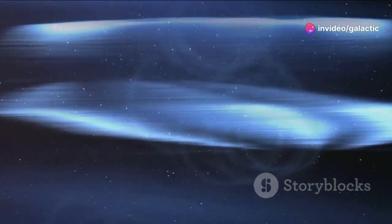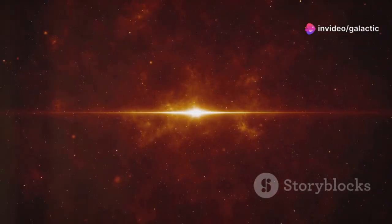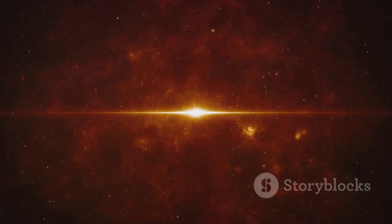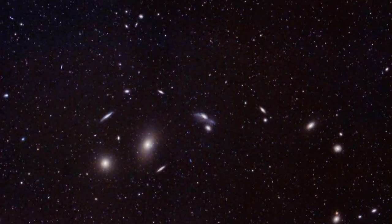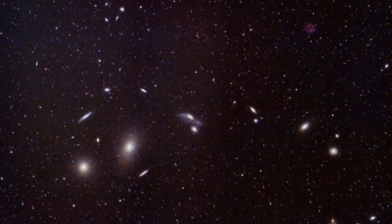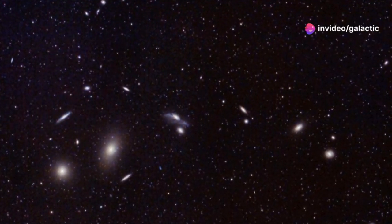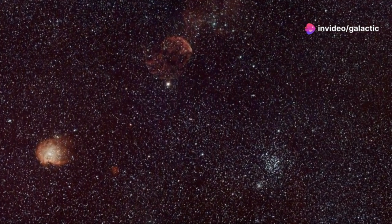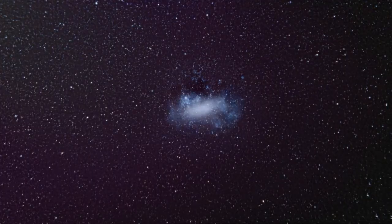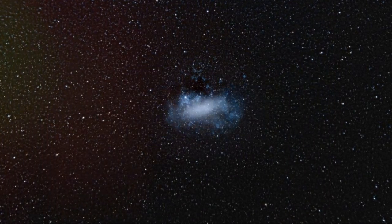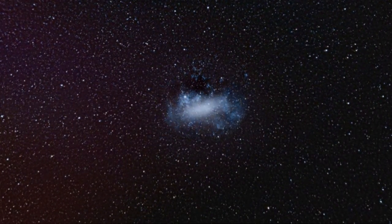The pulsar emits beams of electromagnetic radiation which sweep across space like the beams of a lighthouse. These beams are what make pulsars detectable from Earth. PSR J0952-0607 is located about 3,000 light-years away from Earth in the constellation Sextans. This distance, while vast, is relatively close in astronomical terms, allowing us to study it in great detail.